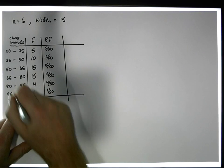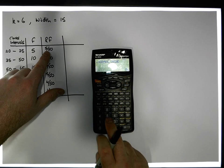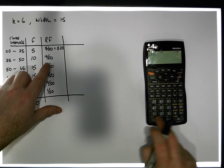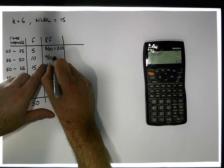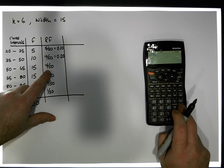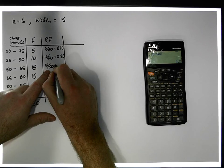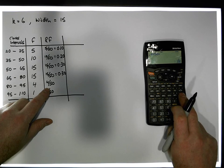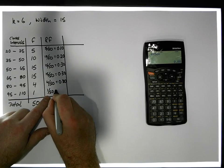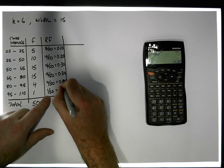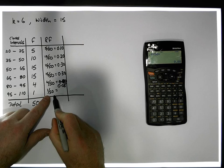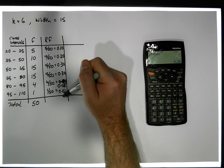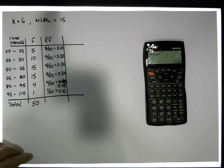We can convert these fractions to decimals. 5 divided by 50 equals 0.10. 10 divided by 50 equals 0.20. 15 divided by 50 equals 0.30. Another 15 divided by 50 is also 0.30. 4 divided by 50 gives 0.08. And 1 divided by 50 gives 0.02. Depending on rounding, these should add up to 1.